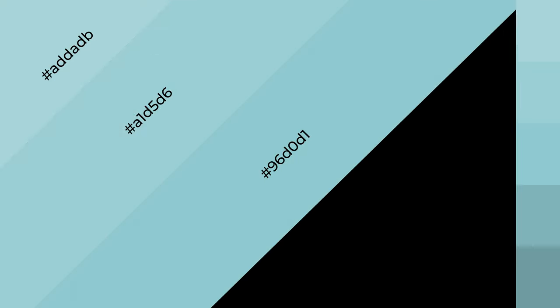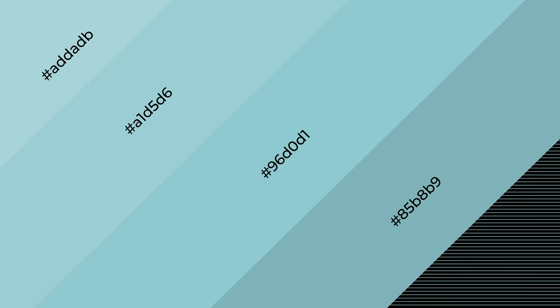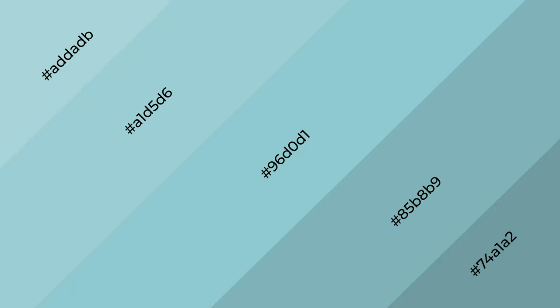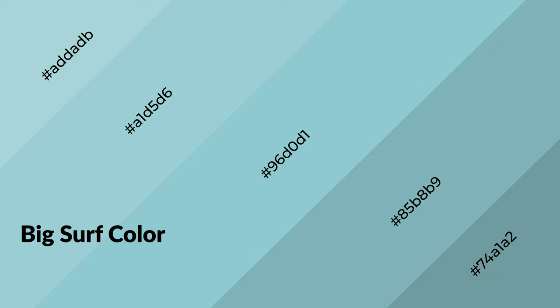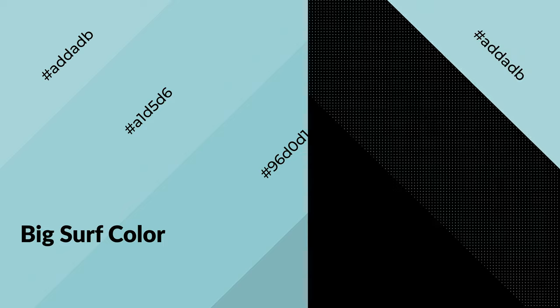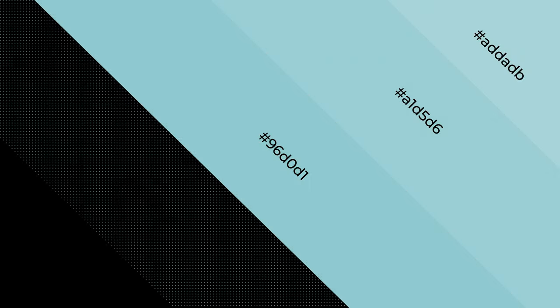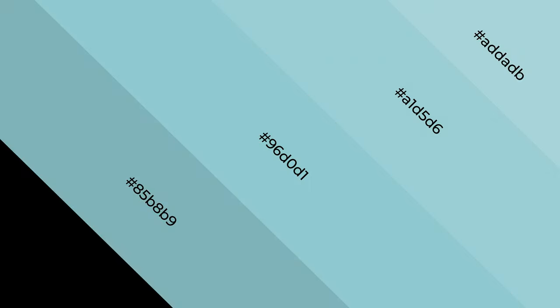Layers and shades create depth and drama. Big Surf is a cool color, and it emits calming, serene, soothing, refreshing, spacious, unwinding, peaceful, and relaxed emotions.